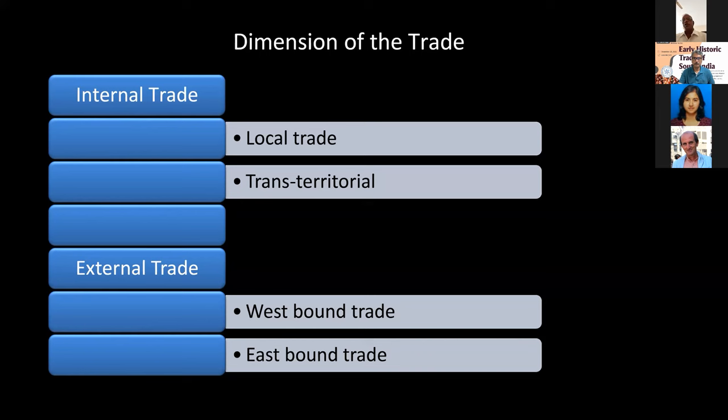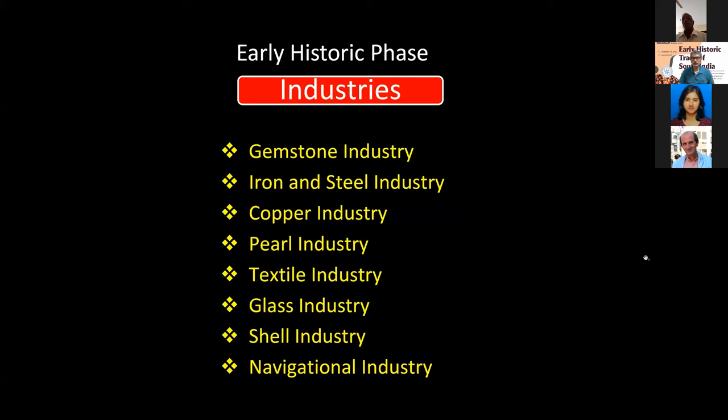The evidences unearthed in our archaeological exploration and excavation include: gemstone industry, iron and steel industry, copper industry, shell industry, textile industry, glass industry, and navigational industry. So even from the limited excavations conducted in all of South India, these industries and activities are visible in our archaeological excavations.